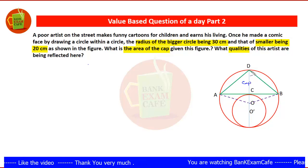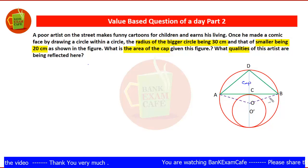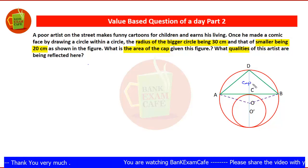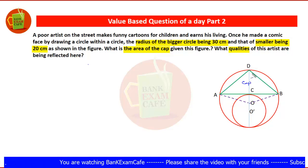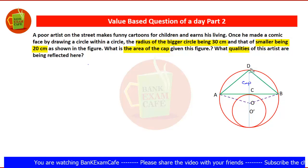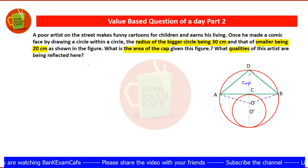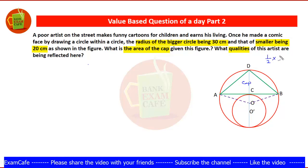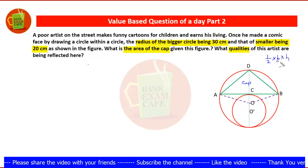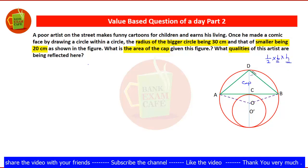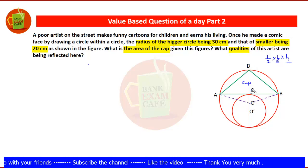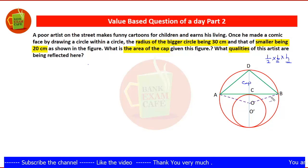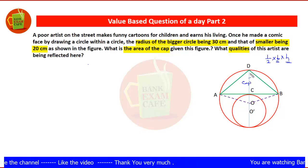We have to find the area of triangle ABD. To solve this question, our thinking process will go like this: for triangle ABD, the formula is area equals one half into base into height. So we will require the base and the height. In triangle ABD, CD is the height and AB will be the base. It means we require AB and we require CD.